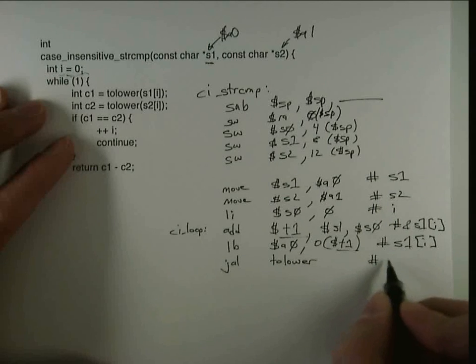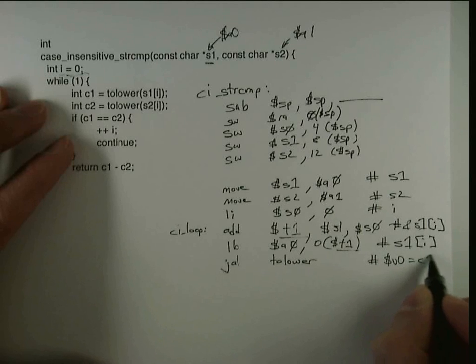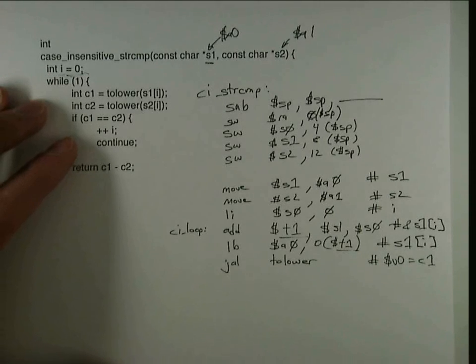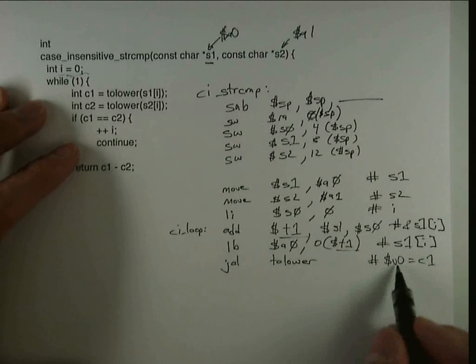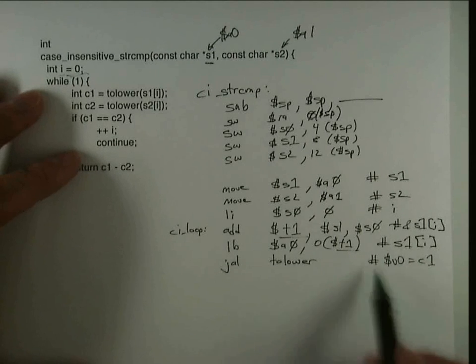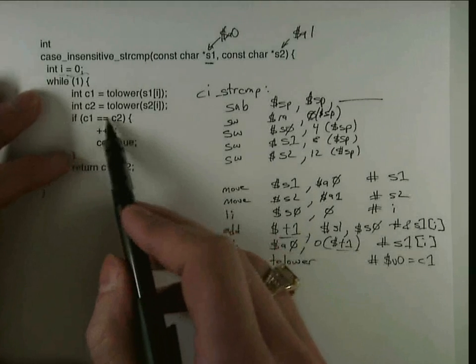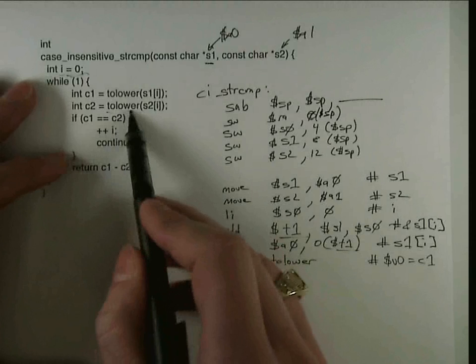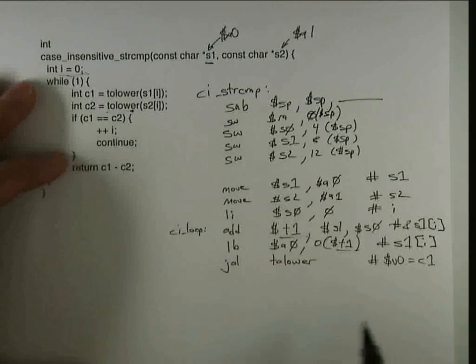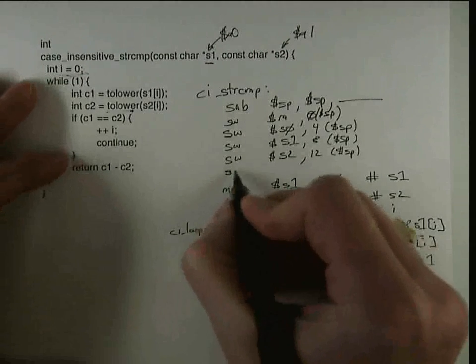And what that means is that after that, v0 is going to hold c1. So because v0 is a caller saved register, I know I need to do something with this variable. I need to move it somewhere else before I do the second call to tolower. And so what I'm actually going to do is I'm going to free myself up a fourth callee saved register.